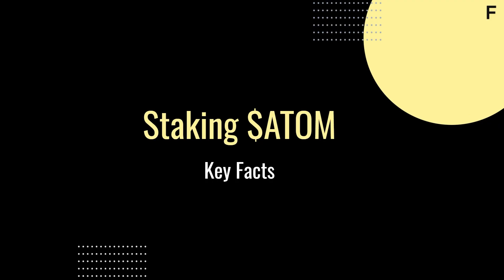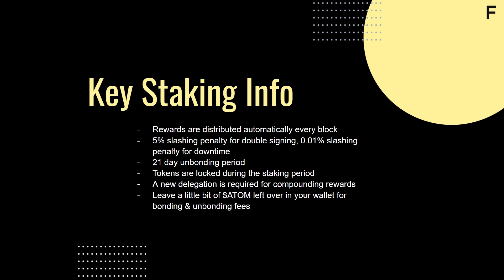Now that we have a basic understanding of Atom, let's look at some key facts for staking Atom tokens on the Cosmos network. Rewards are distributed automatically every block. There's a 5% slashing penalty for double signing and a 0.01% slashing penalty for downtime. There's a 21-day unbonding period and tokens are locked during the staking period. A new delegation is required for compounding rewards, so make sure to leave a little bit of Atom leftover in your wallet for bonding and unbonding fees.